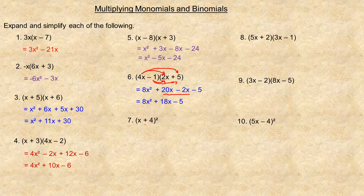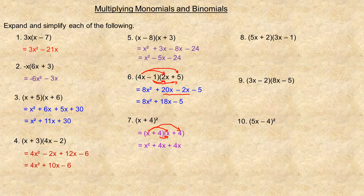For number 7, x plus 4 squared means (x + 4) times (x + 4). Distributing the x: x times x is x squared, and x times 4 is 4x. Since both binomials are the same, multiplying 4 by x gives another 4x, and 4 times 4 is 16. The like terms 4x and 4x add to 8x, giving x squared plus 8x plus 16.